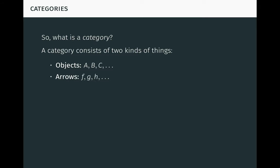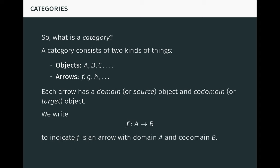And arrows, which we typically denote by letters like F, G, H, and so on. Each arrow has a domain or source object and a codomain or target object. We write F: A → B to indicate that F is an arrow with domain A and codomain B.